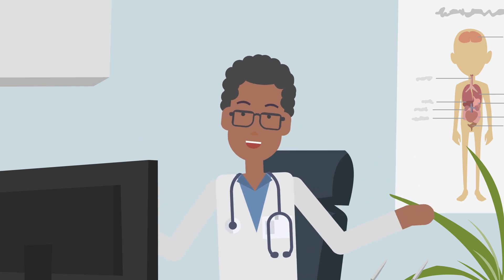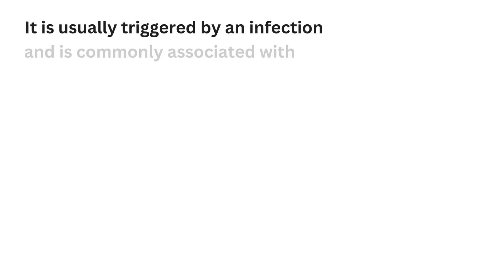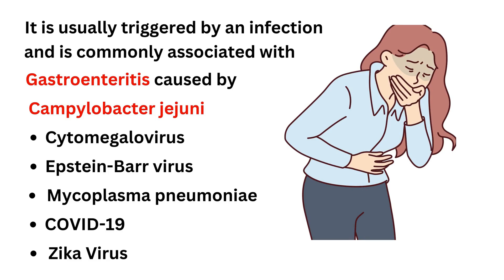Most cases of Guillain-Barré syndrome start within three weeks of an infection. It is usually triggered by an infection and is commonly associated with gastroenteritis caused by Campylobacter jejuni. It can also occur after an infection with cytomegalovirus, Epstein-Barr virus, or mycoplasma pneumonia. There have also been cases associated with COVID-19 and Zika virus.